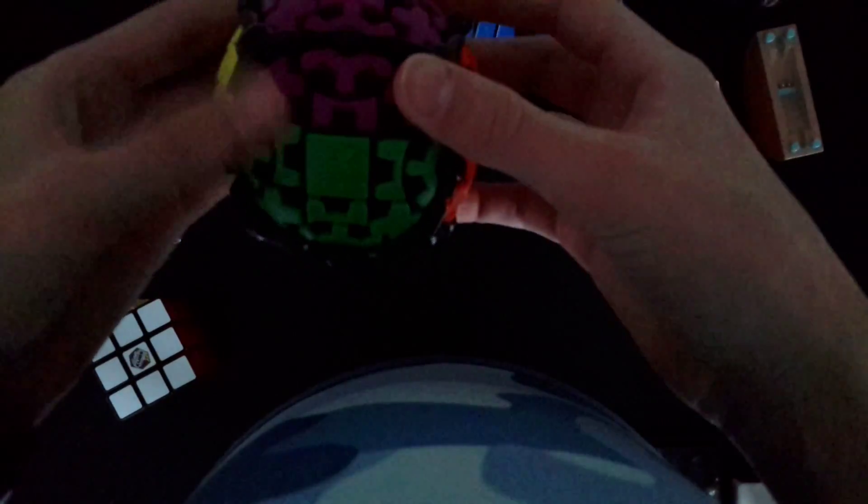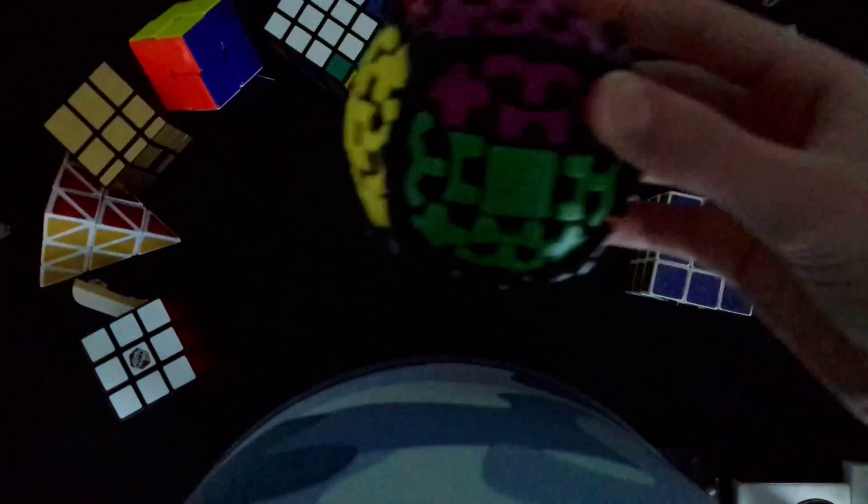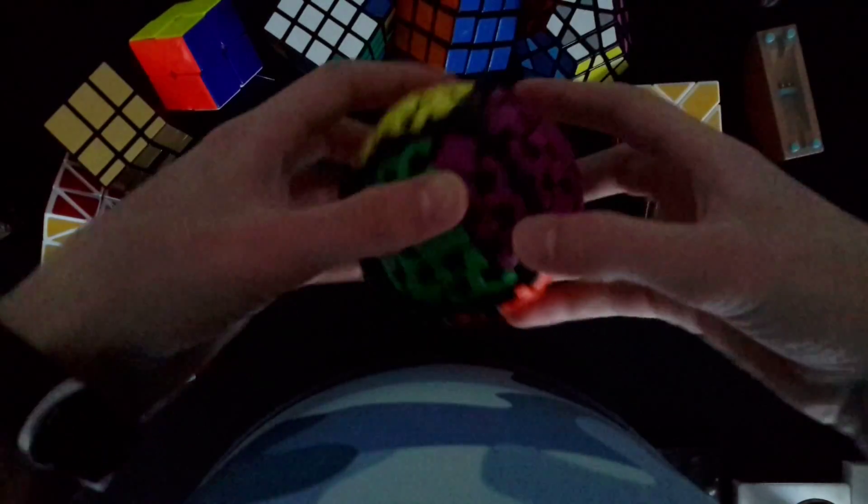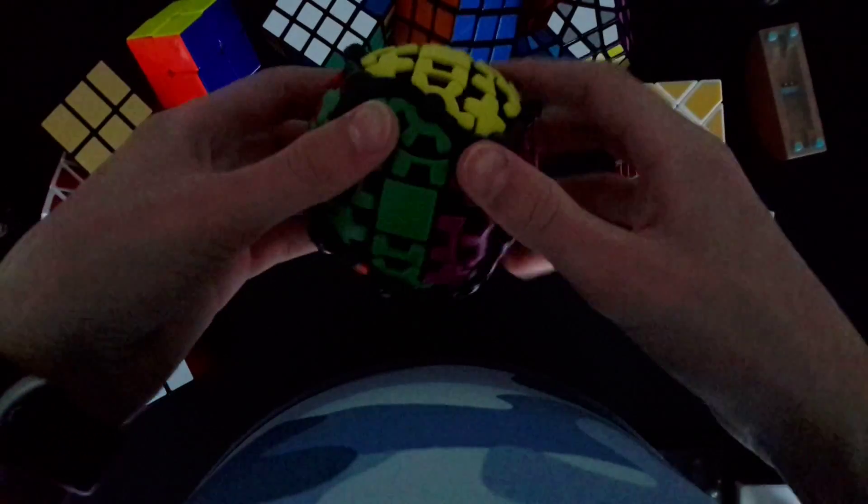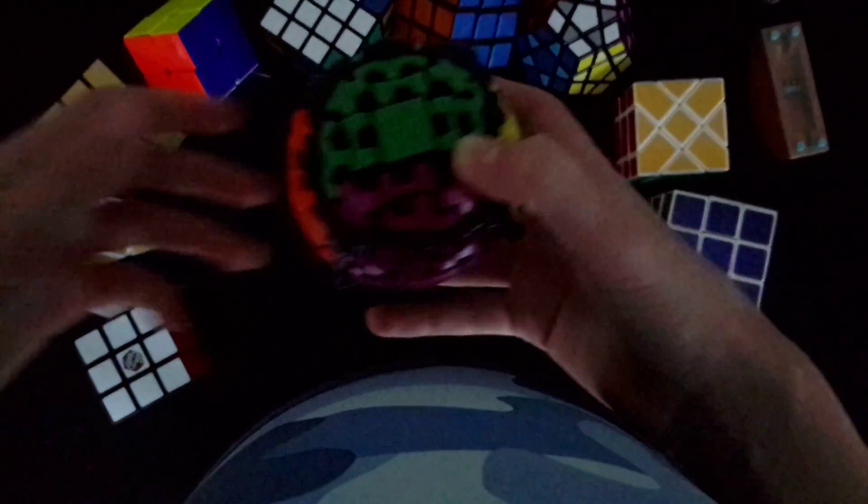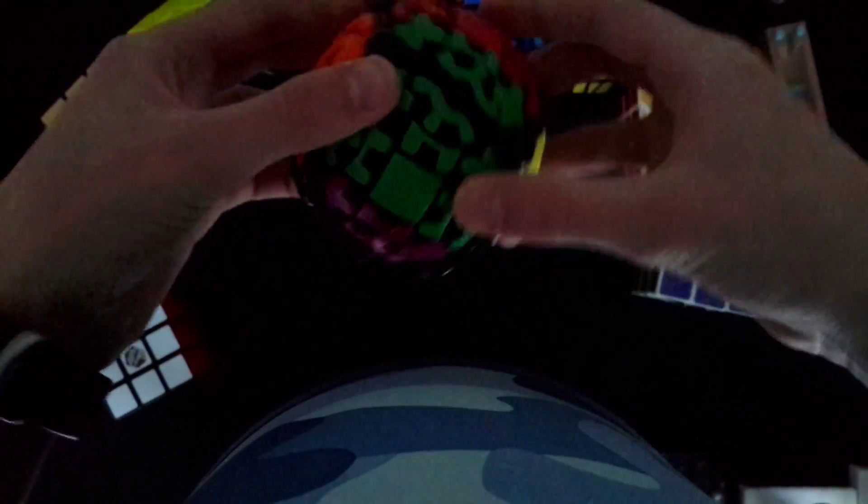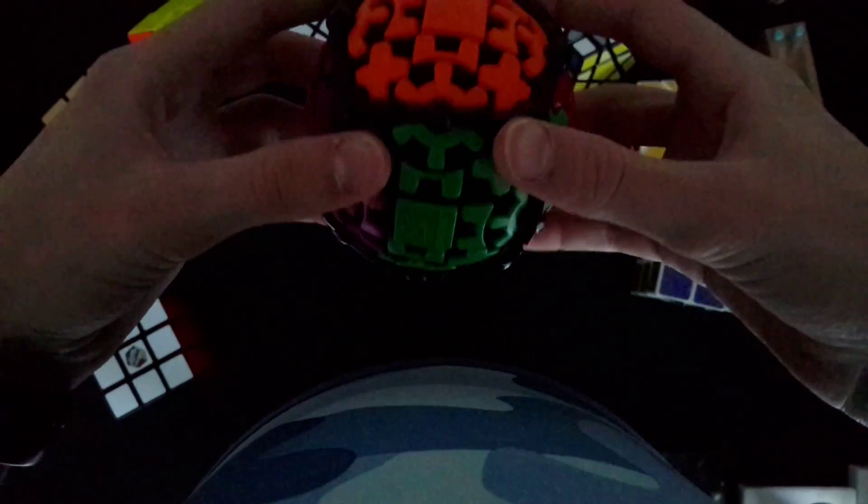We got some new cubes, all right? So we got this one. Not the nicest, but yeah, not even close. But still, it's a three by three cube, version one. Version one is a stickered one.